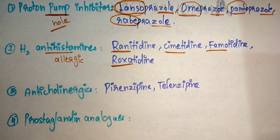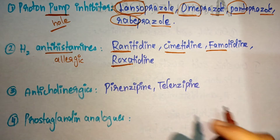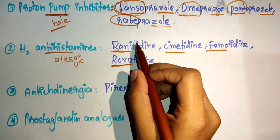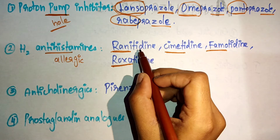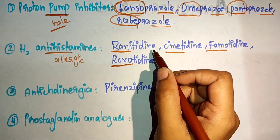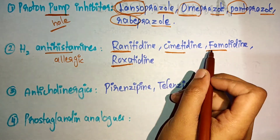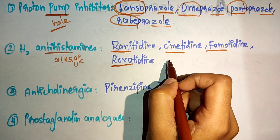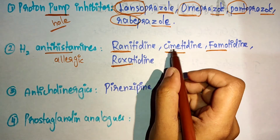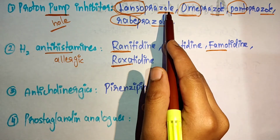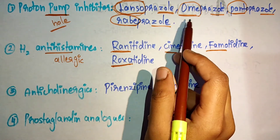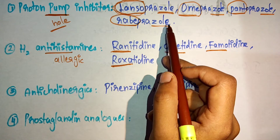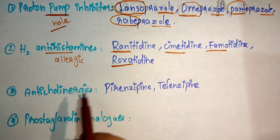One more thing to note: all H2 antihistamine drugs end with '-tidine' (T-I-D-I-N-E), and all proton pump inhibitor drugs end with '-zole'. You can remember the drug class by its suffix.